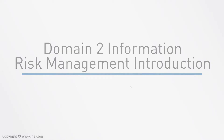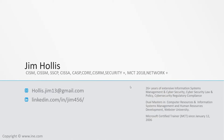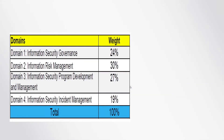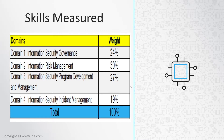Greetings. My name is Jim Hollis and I am your subject matter expert for this particular course of instruction. Let's begin by taking a look at the skills going to be measured in regards to this exam. During this presentation we'll focus primarily upon Domain 2, dealing specifically with Information Risk Management. This exam measures your ability to accomplish the technical tasks listed above. The percentages indicate the relative weight of each major topic area on the exam — the higher the percentage, the more questions you'll likely see on that content area.